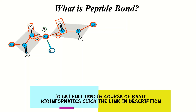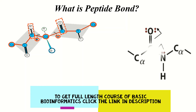Now there is one very important question here: why does the peptide bond have a double bond-like character? Let us try to understand this phenomenon. If you look at the peptide bond as shown in the diagram, you can see that there are two lone pairs on the oxygen, while there is one lone pair on the nitrogen. Because of these lone pairs, there may be resonance of a double bond.